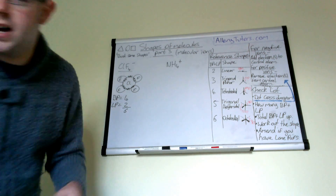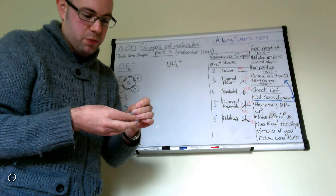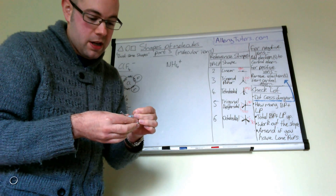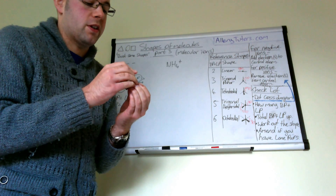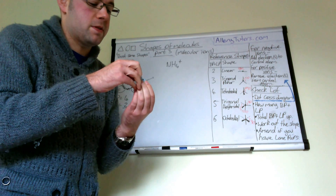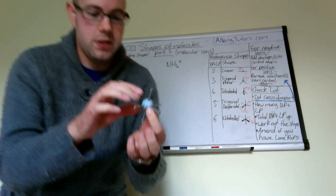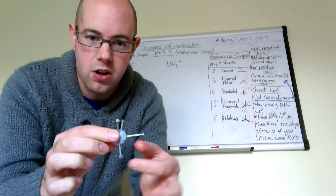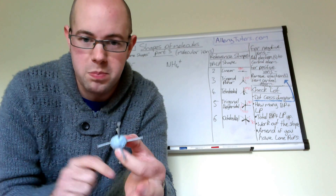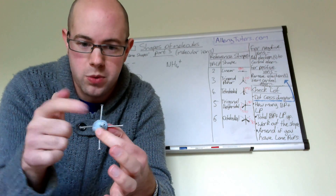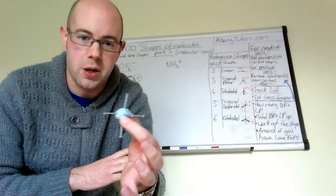I'll show you that with this model here — a very simple model that can help you understand these 3D shapes, which can be quite difficult to understand at times. There's our 3D model. You can see that it's based on the octahedral shape, with six different bonds sticking out. We've got two poles and one either side, and you can see we have two lone pairs — top and bottom.